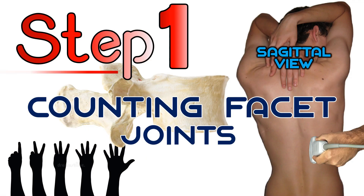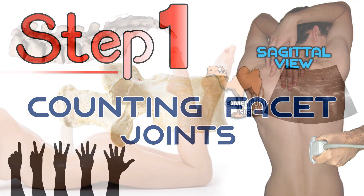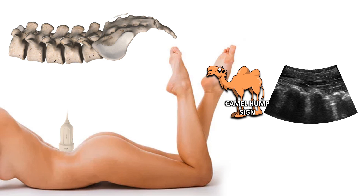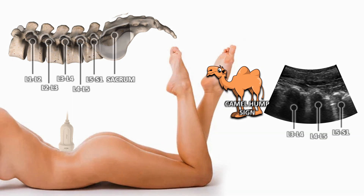The first step: facet joints can be visualized in a paramedian sagittal exploration as wavy, wide structures with humps, typically described as the camel hump sign.